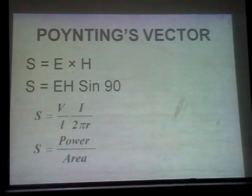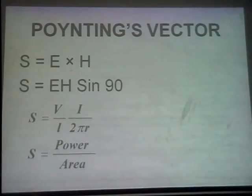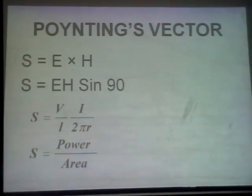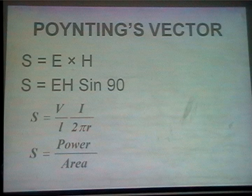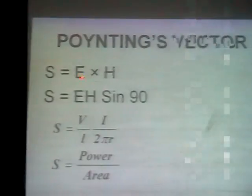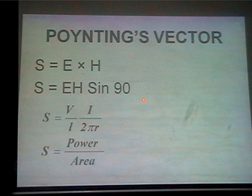Now we have to talk about the Poynting vector. The concept of the Poynting vector was developed to explain the flow of energy. Take the example of a radio transmitter–receiver system — between transmitter and receiver, energy is flowing through air. To explain the concept of energy flowing through a dielectric medium like air, the Poynting vector is defined as S = E × H. Since E and H are perpendicular, S = EH sin 90°. The Poynting vector is called the power density vector.